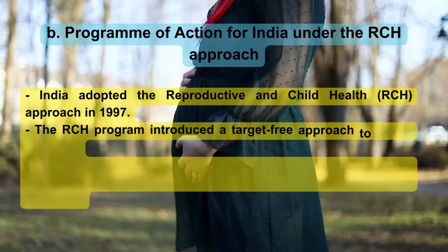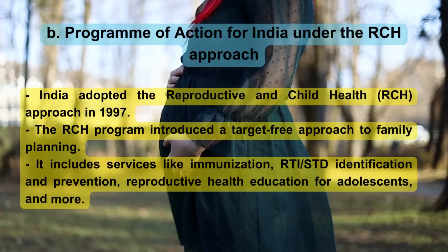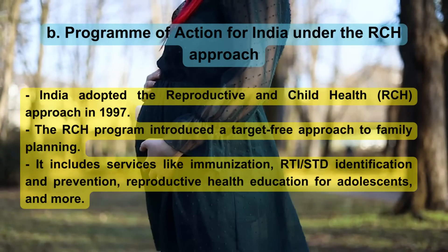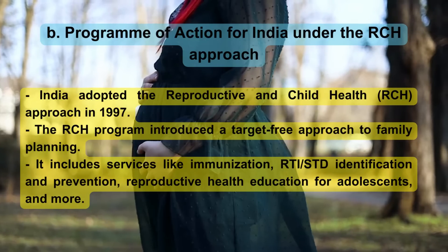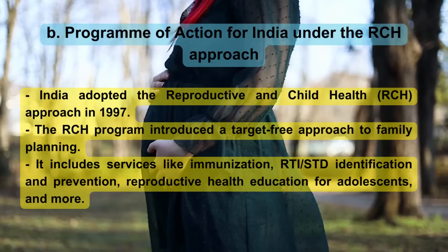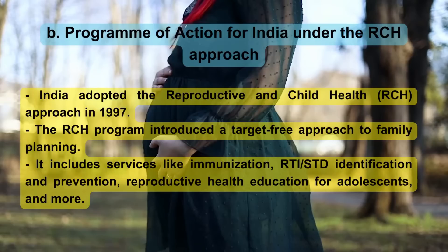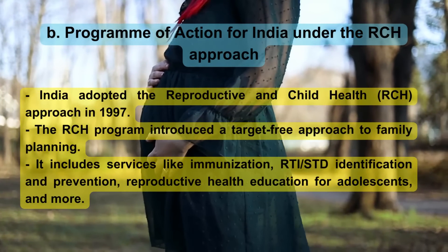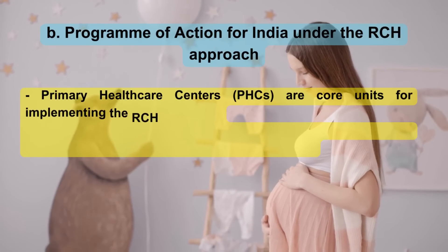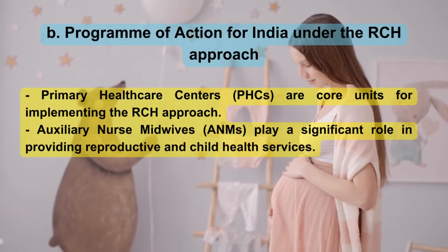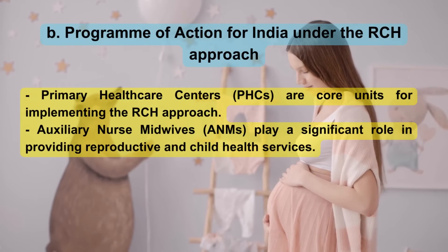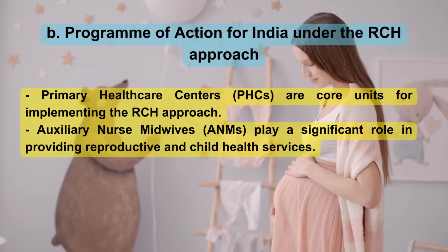Program of Action for India under the RCH approach. India adopted the Reproductive and Child Health (RCH) approach in 1997. The RCH program introduced a target-free approach to family planning. It includes services like immunization, RTI and STD identification and prevention, reproductive health education for adolescents, and more. Primary Health Care Centers (PHCs) are core units for implementing the RCH approach. Auxiliary Nurse Midwives (ANMs) play a significant role in providing reproductive and child health services.